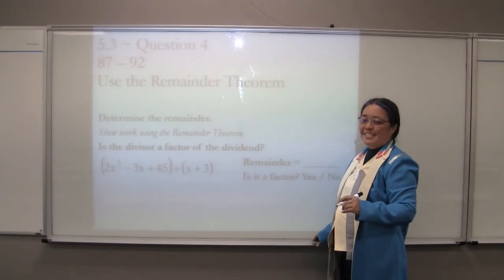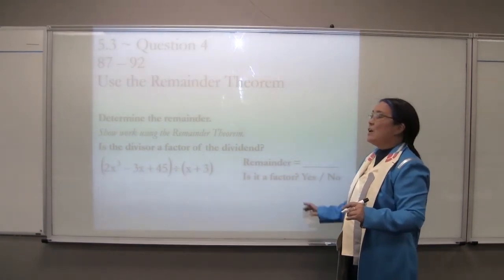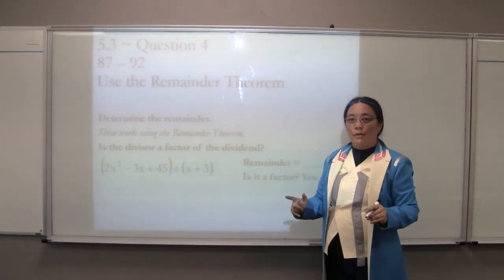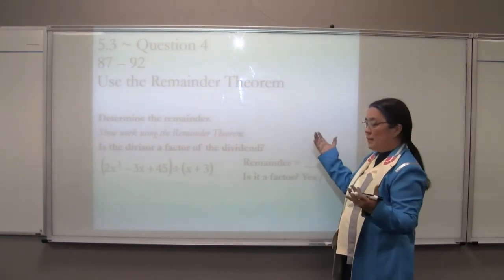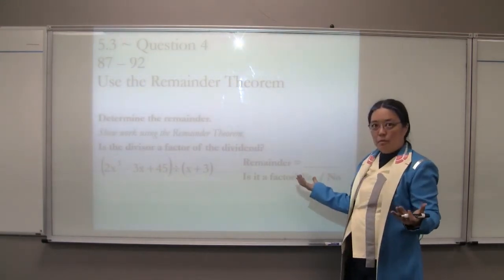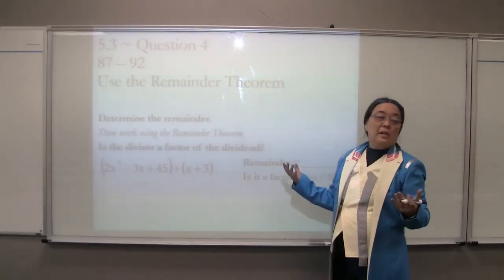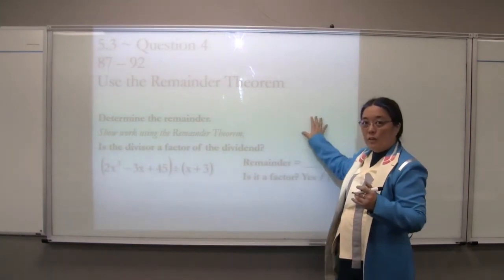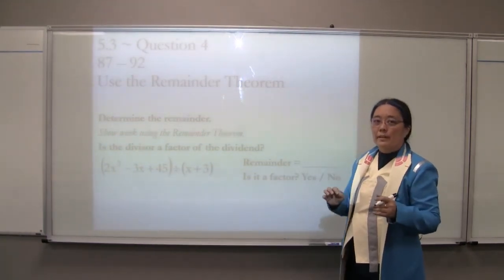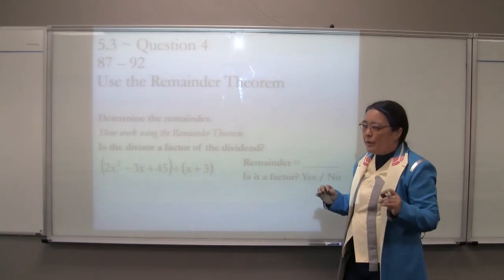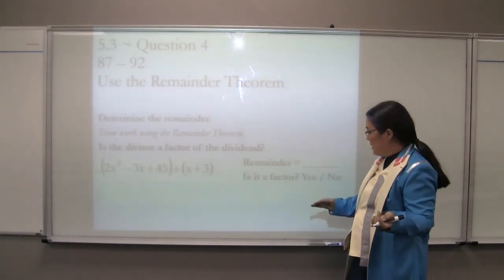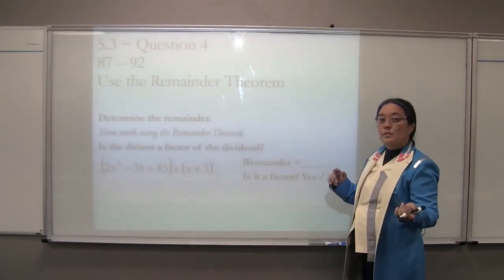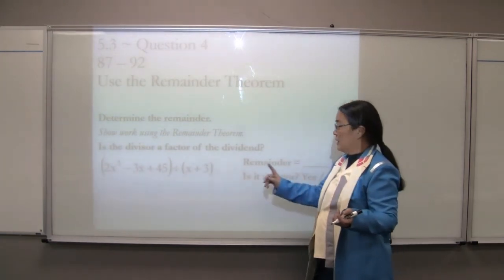Chapter 5, Section 3, Question 4 — using the Remainder Theorem. The Remainder Theorem, theorem being something that can be proven. We're going to find out how to get the remainder for a long division problem very, very quickly. Why do we only want to know the remainder? Because we want to know if it's a factor or not, and this will be a very fast way of doing it.